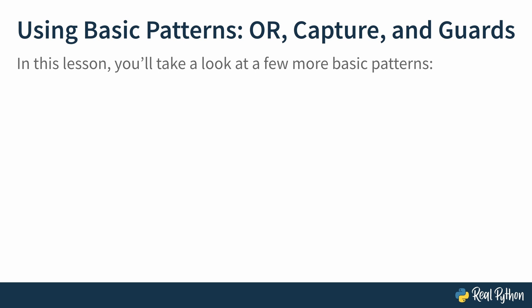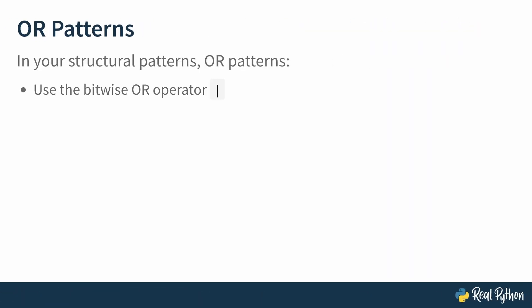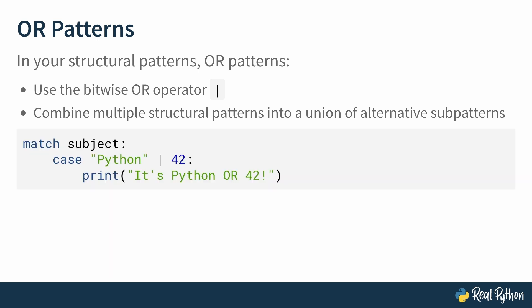Let's explore a few more fundamental pattern types. In this lesson, you'll see or patterns, capture patterns, and guards. First up, or patterns. Or patterns use the bitwise or operator. Some call it a vertical bar, some call it a pipe. They're used to combine structural patterns into a union of alternative subpatterns. For example, match subject, case, the string Python, or the integer 42, print, it's Python or 42. Python or 42 will match the case clause.